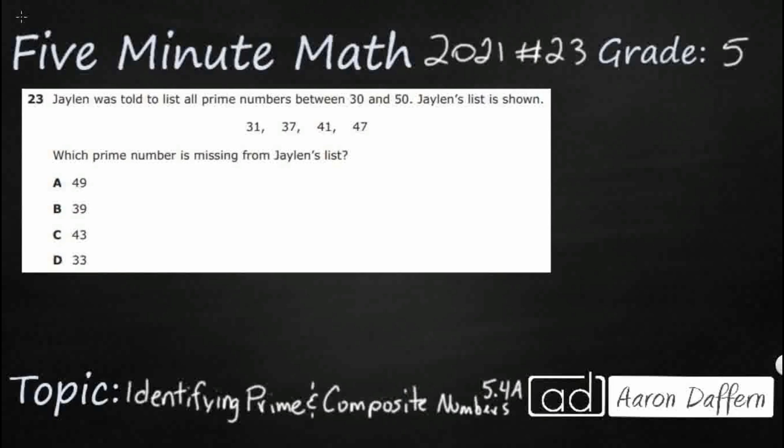So, Jalen was told to list all the prime numbers between 30 and 50. His list is shown. Which prime number is missing from Jalen's list? Well, we need to know the difference first between prime and composite.